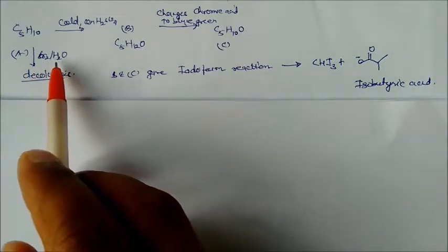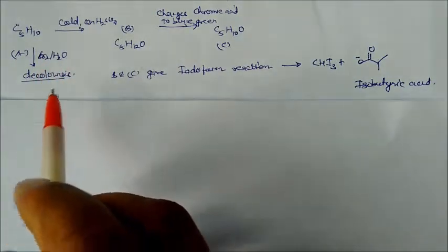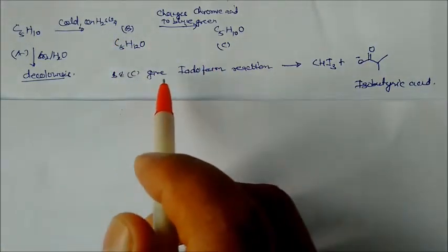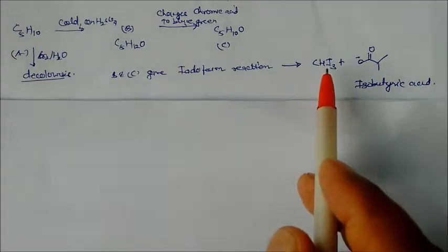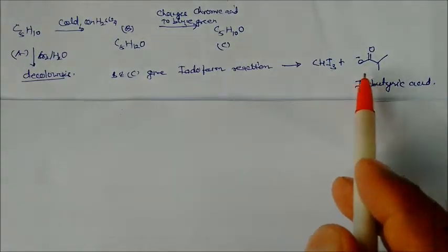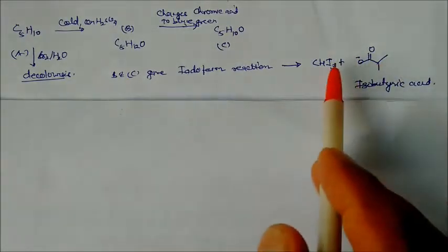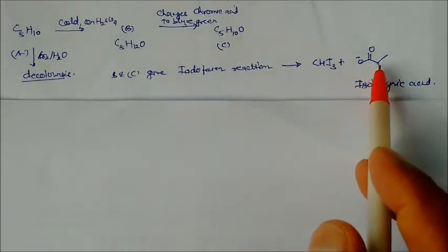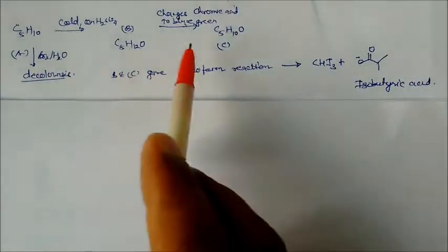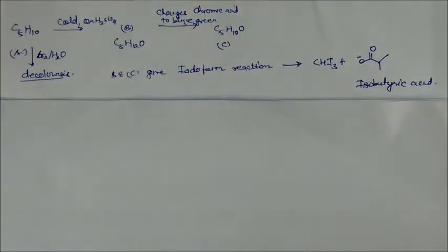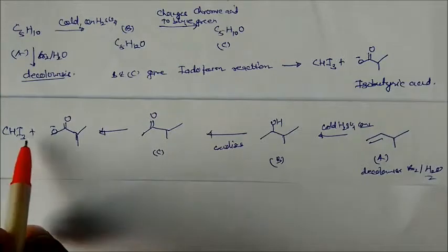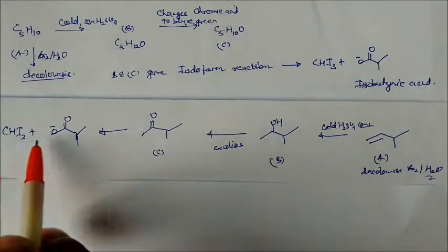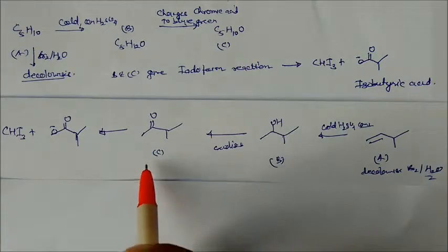One important piece of information: B and C can both give the iodoform reaction. Iodoform reaction means they give CHI3 (iodoform) and isobutyric acid as products. From this iodoform result and the isobutyric acid we can estimate the structure of compound B.